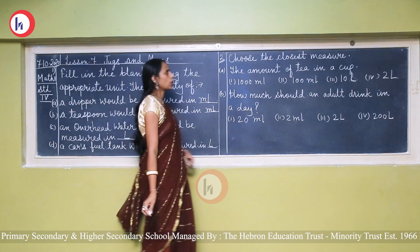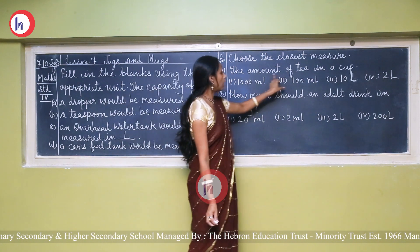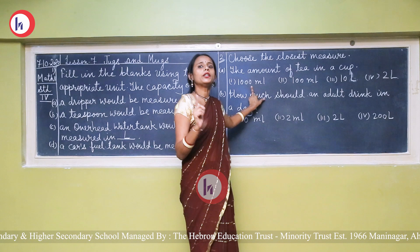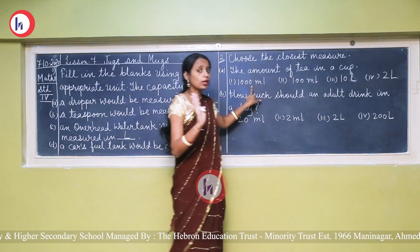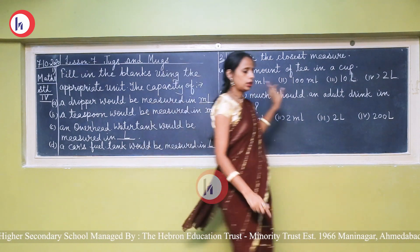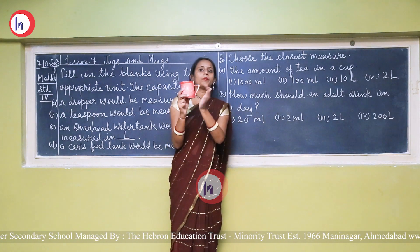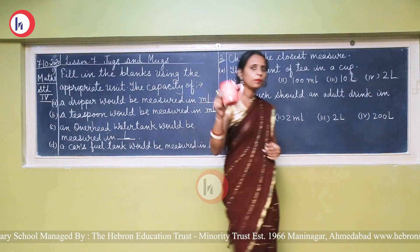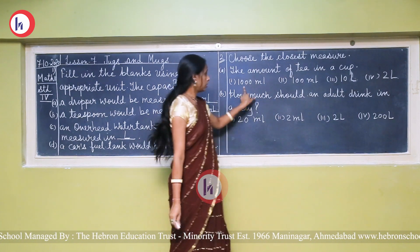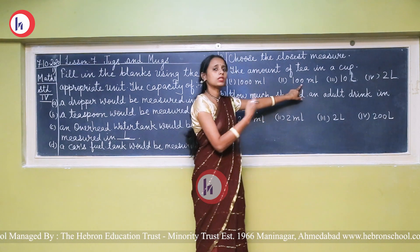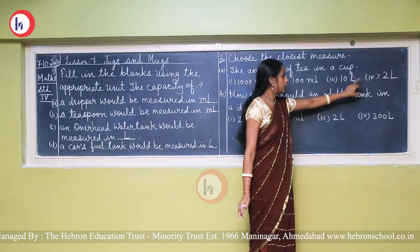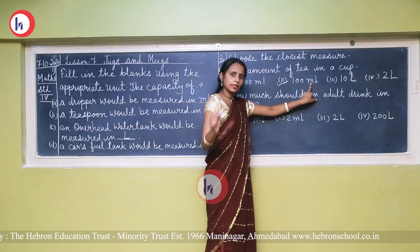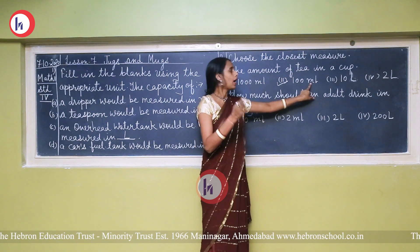Now choose the closest measure. First question: the amount of tea in a cup. The options are one thousand milliliters, one hundred milliliters, ten liters, and two liters. One thousand milliliters equals one liter — that is too much for a cup. Ten liters and two liters are also far too large. A cup can hold only around one hundred milliliters, so the answer is one hundred milliliters as the closest measure.